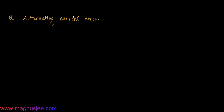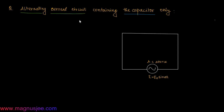Alternating current circuit containing capacitor only. In this circuit, a capacitor of capacitance C is connected to an AC source of EMF e = e0·sin(ωt). Here, i0 is the peak value of current and i is the instantaneous value of alternating current generated from the AC source, flowing through the capacitor C.